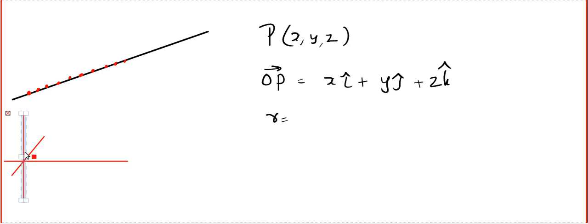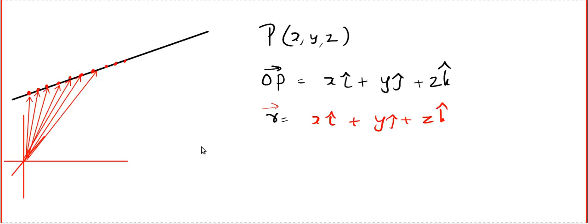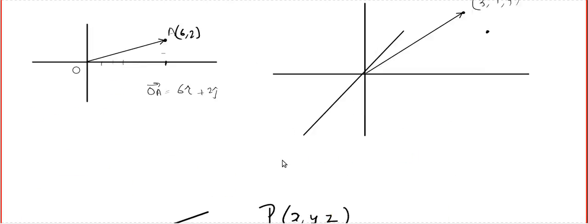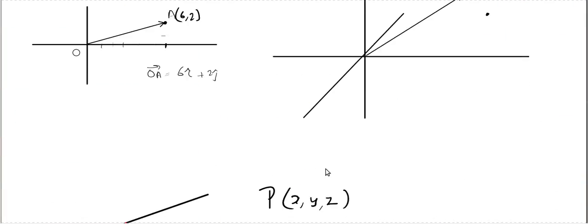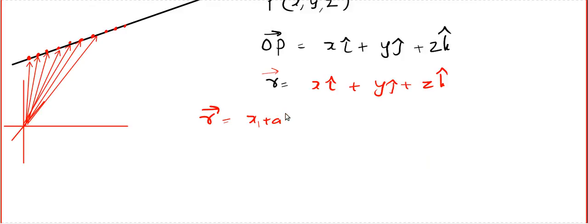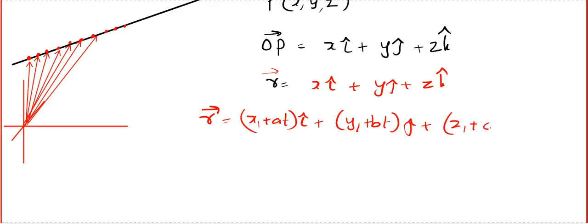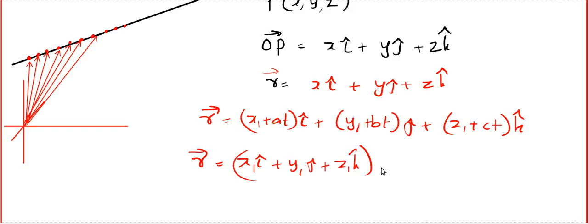This position vector OP — which we call r — represents every position vector of points on the line. Substituting x = x1 + At, y = y1 + Bt, z = z1 + Ct, we get r = (x1i + y1j + z1k) + t(Ai + Bj + Ck). This is the vector form of the equation of the line.